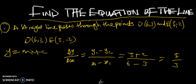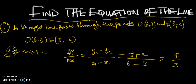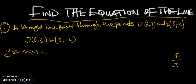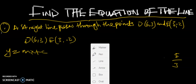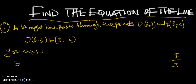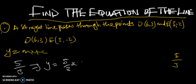Now take this slope value and substitute it into the equation y = mx + c. We have m = 5/3, so this implies that y = (5/3)x + c.